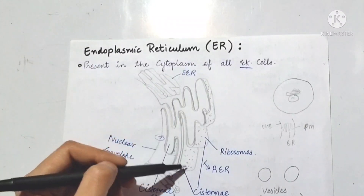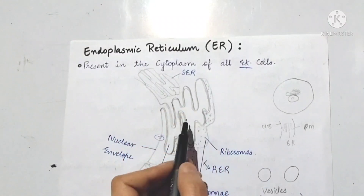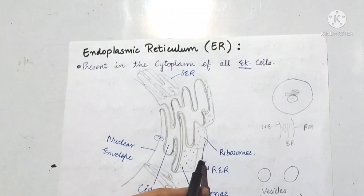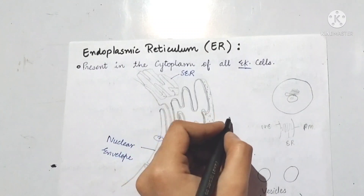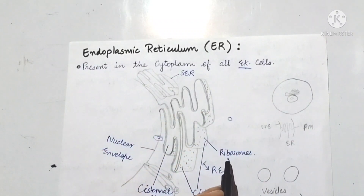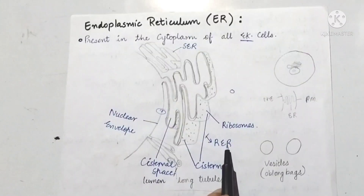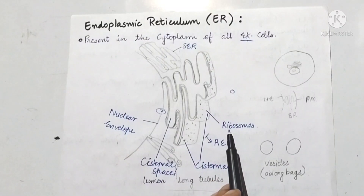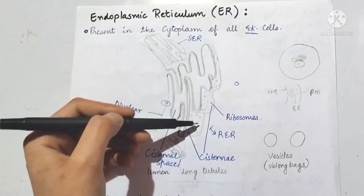This is endoplasmic reticulum. The texture and surface is rough because ribosomes are present. These are round bodies called ribosomes. This is a rough endoplasmic reticulum. This is in sheets form, folded.